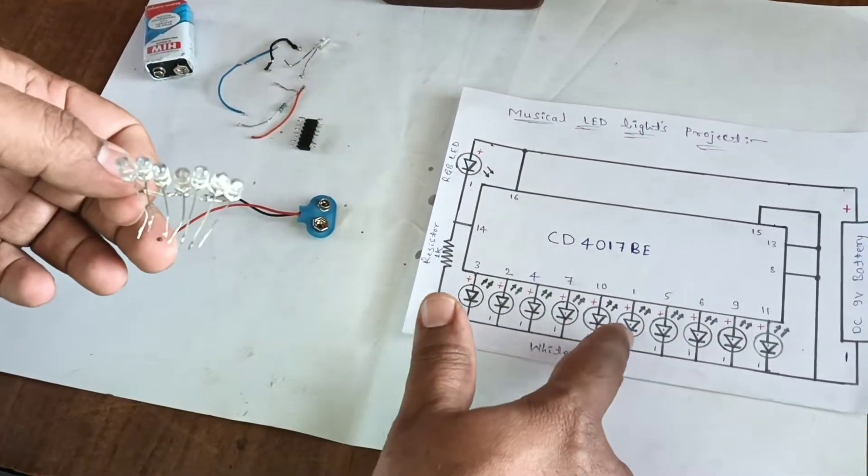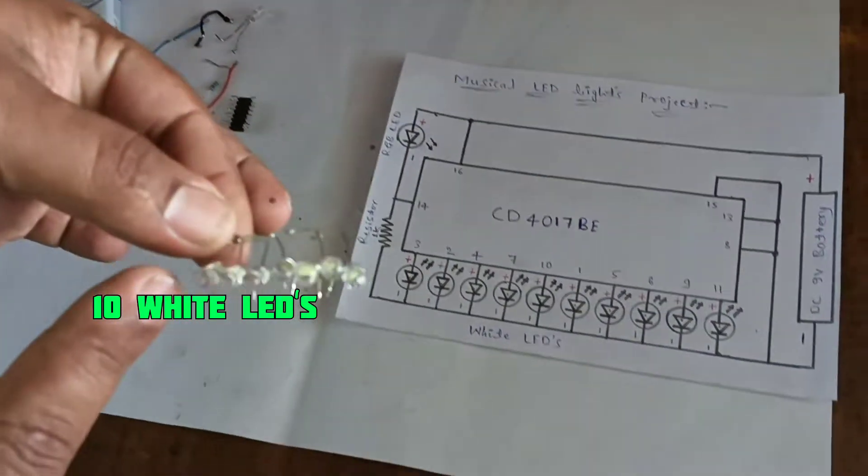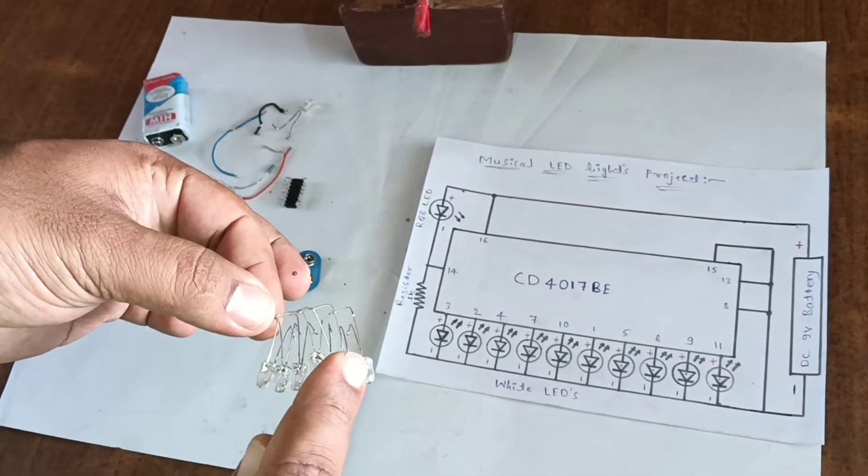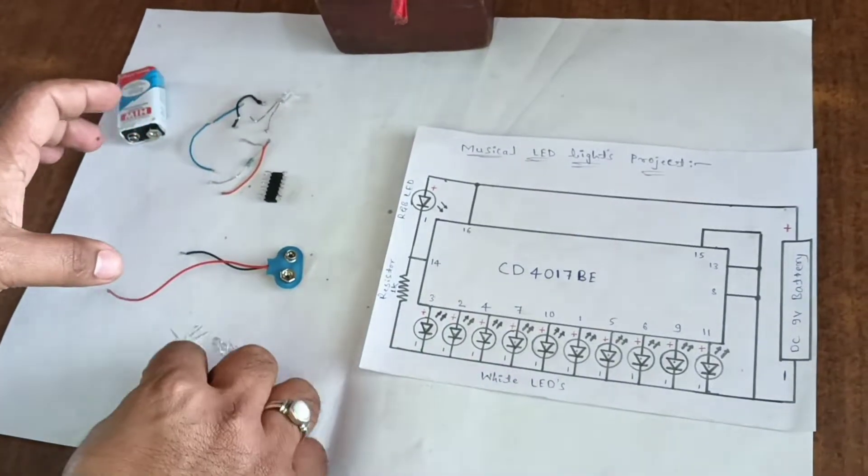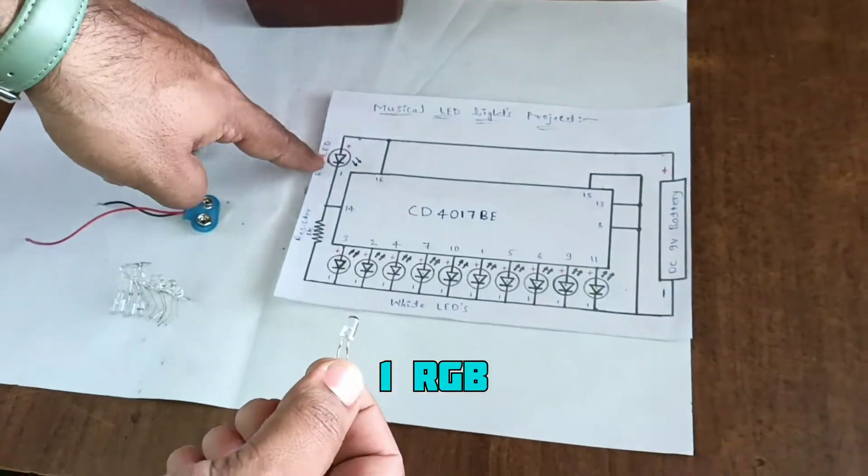1, 2, 3, 4, 5, 6, 7, 8, 9, 10. These are the LEDs, white LEDs. 1, 2, 3, 4, 5, 6, 7, 8, 9, 10. Then 10 white LEDs and 1 RGB LED.